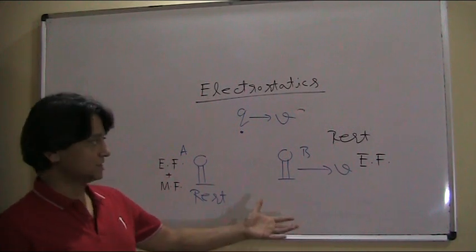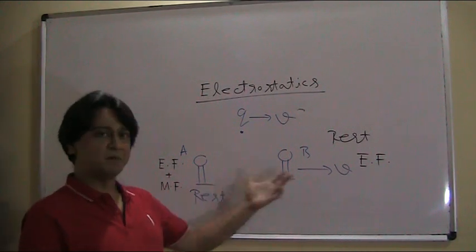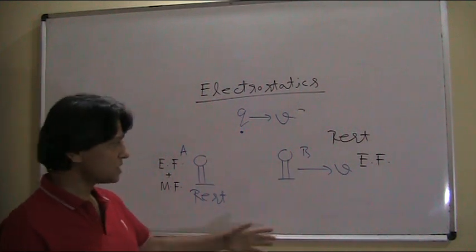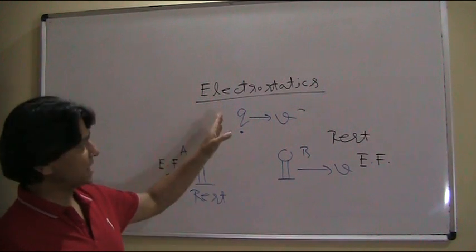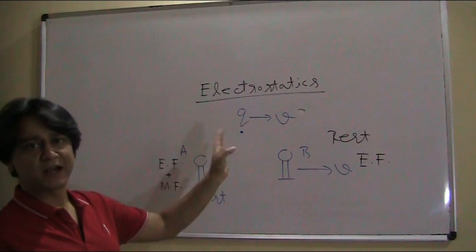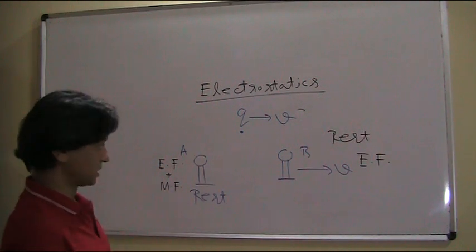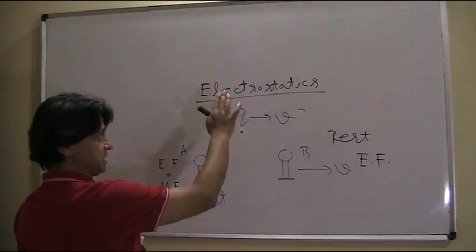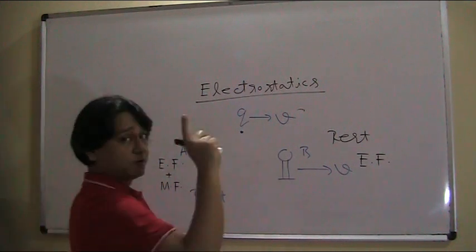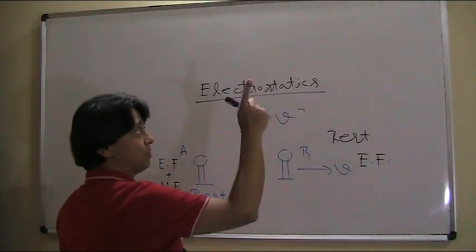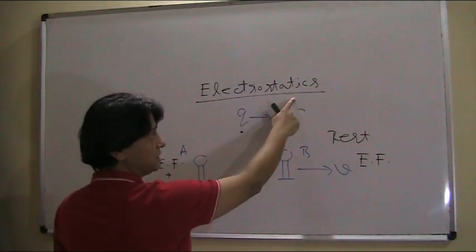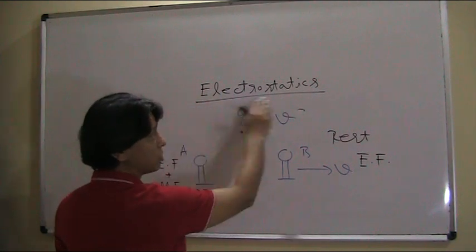So what we say is that electric field and magnetic field are observer-based quantities. For different observers, the same charge can produce either only an electric field, or both electric and magnetic fields. When we study the behavior of a charge for an observer who finds that the charge is at rest, that is called electrostatics.